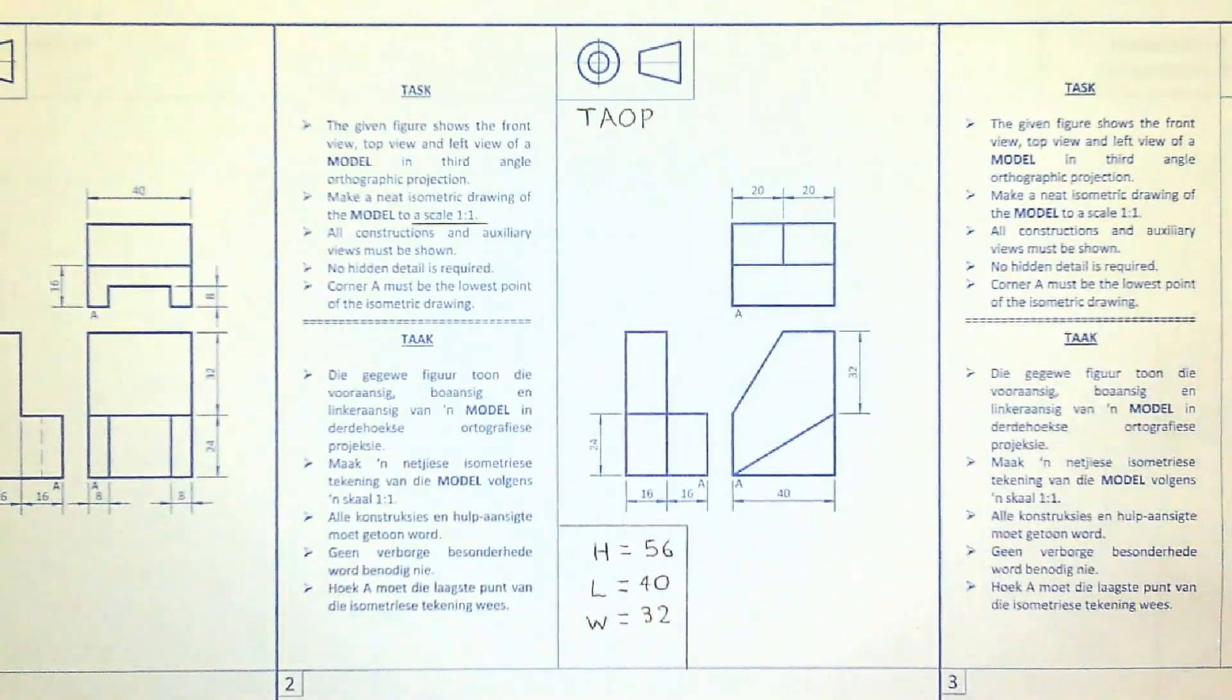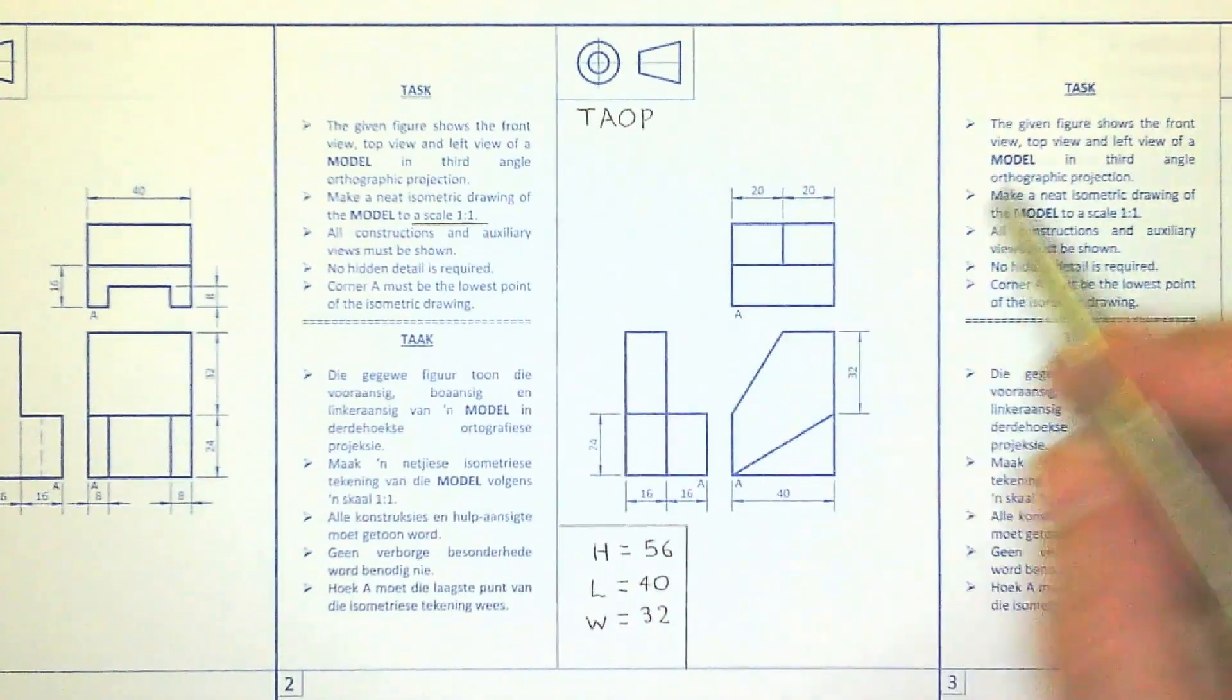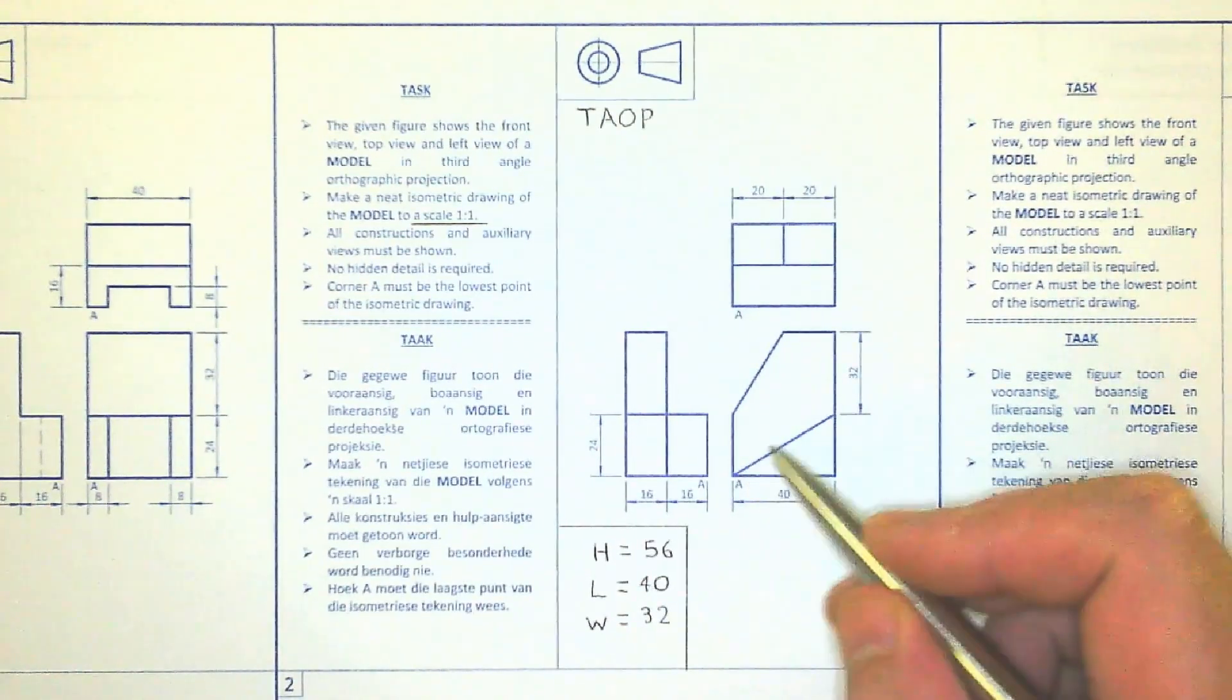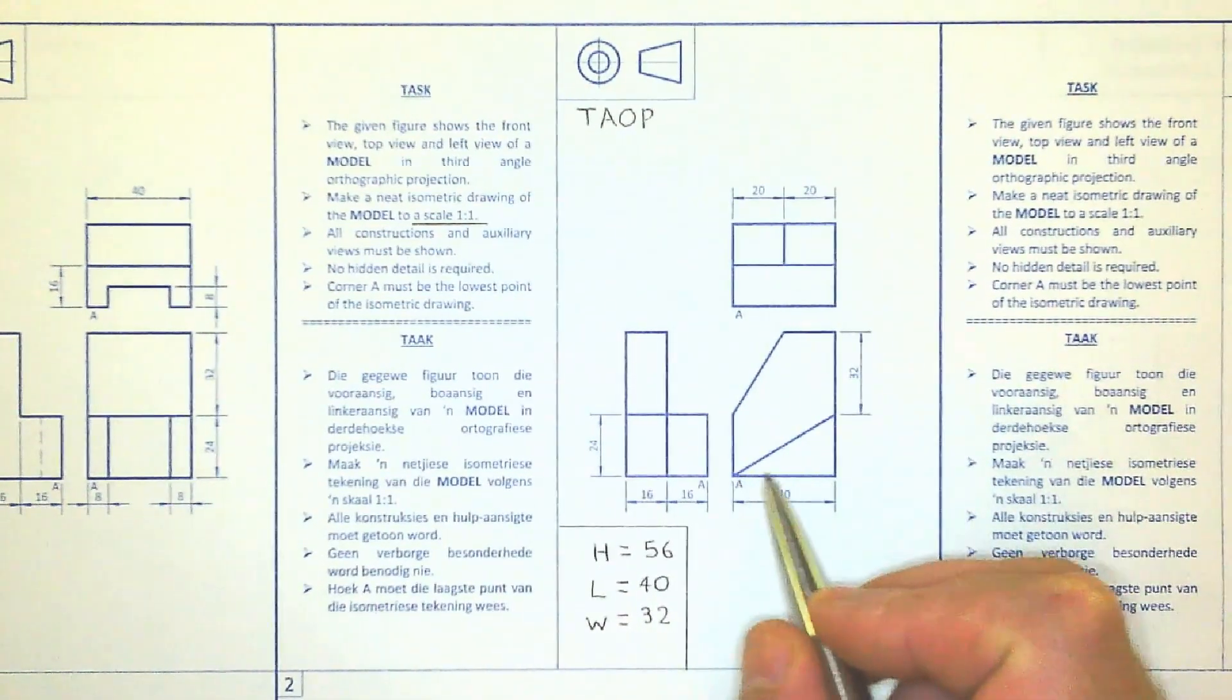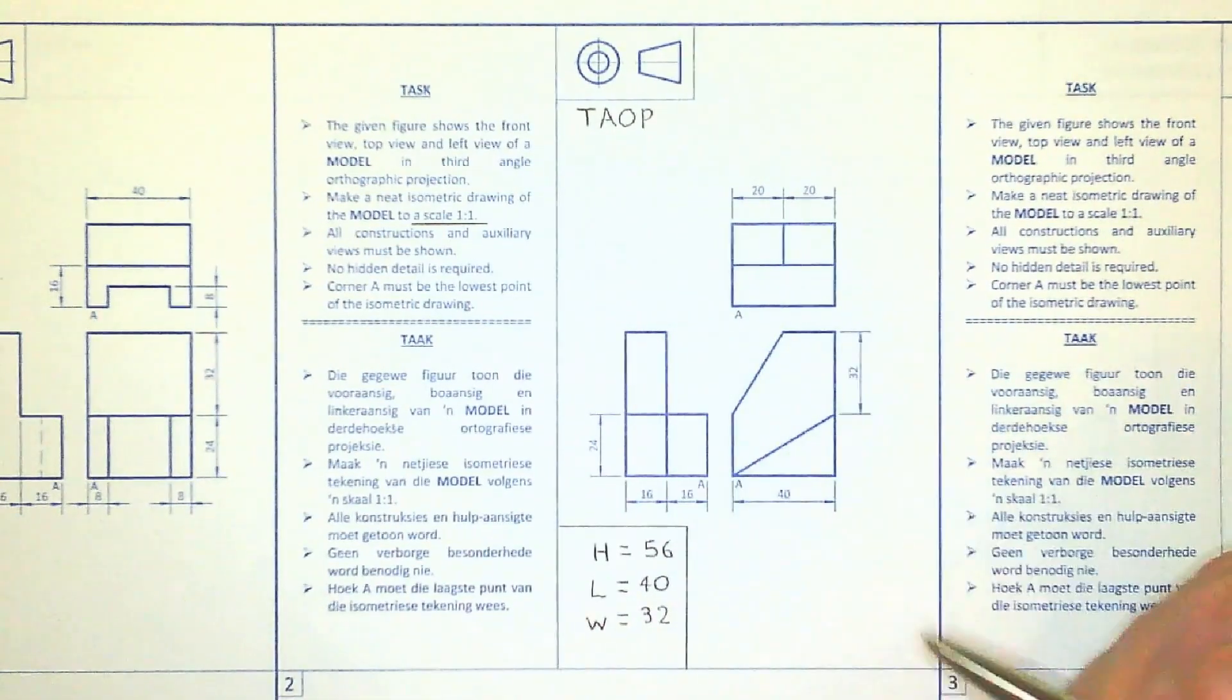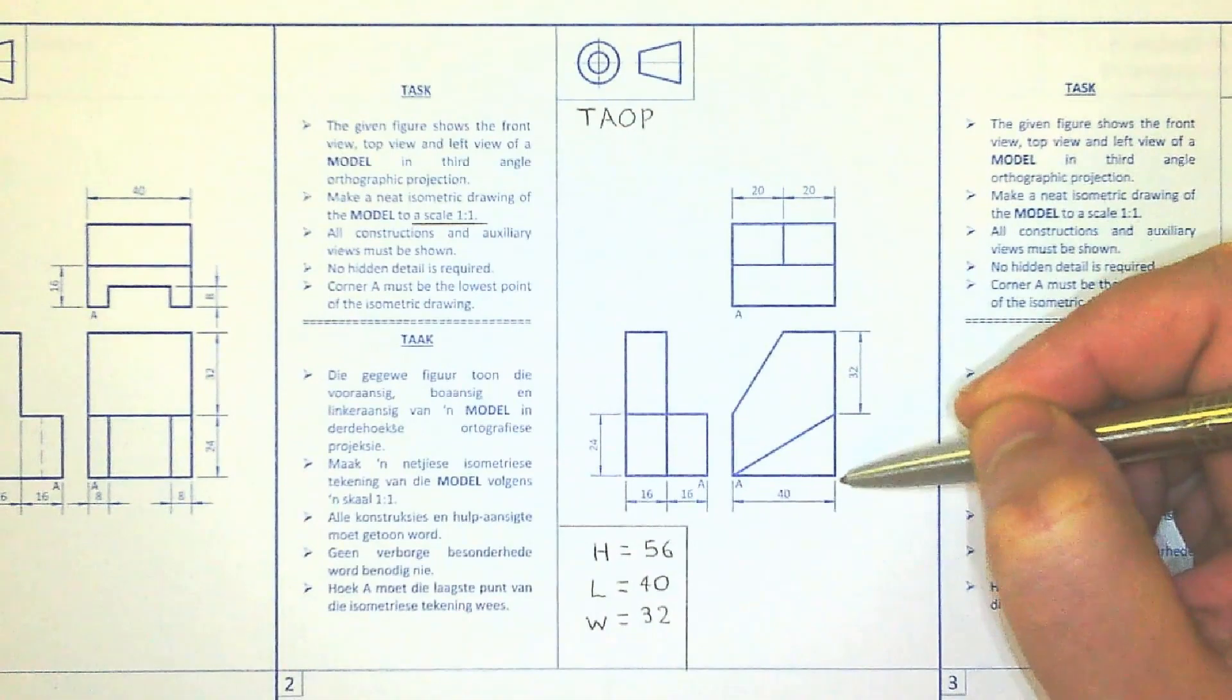Then looking at the front view we can clearly see there are two slopes, one in the back and one in the front. So these are what are going to be transferred into non-isometric lines. So all the horizontal lines that you see here will be drawn at 30 degrees.